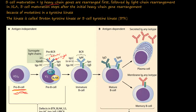The light chain of the immunoglobulin can be attached to the B cell or secreted off. The heavy chains are rearranged first, and then the light chains are rearranged. In XLA, the B cell maturation stops — it doesn't go past this step.